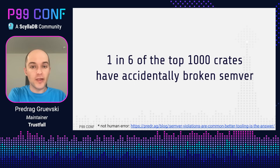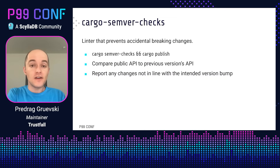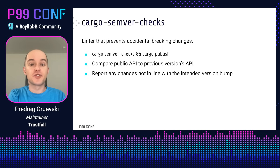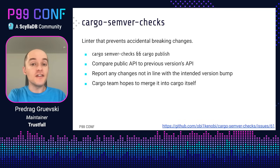The causes of this are complex and human error is not one of them. If you'd like to learn more, you can check out the blog post at the link at the bottom of the slide. Cargo Semverchecks is a linter that prevents accidental breaking changes. It's designed to run right before publishing a new version, at which point it scans the public API to compare it against the previous version's API, flagging any changes that are not in line with the intended version bump. It's gotten a fair bit of community adoption, and the Cargo team hopes to merge it into Cargo itself.